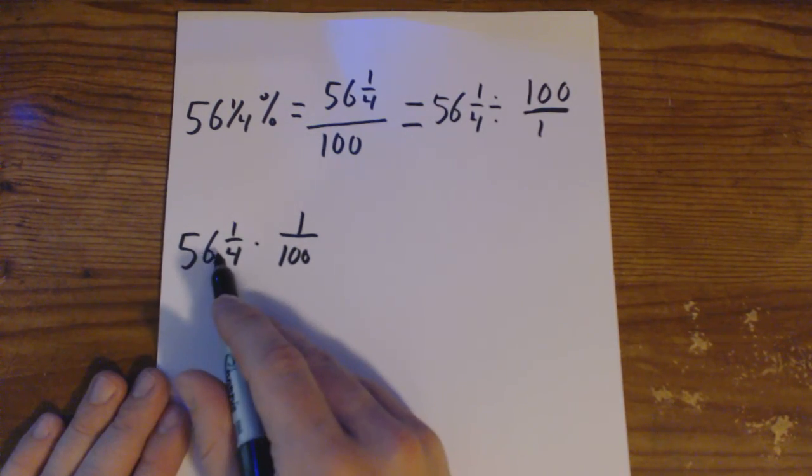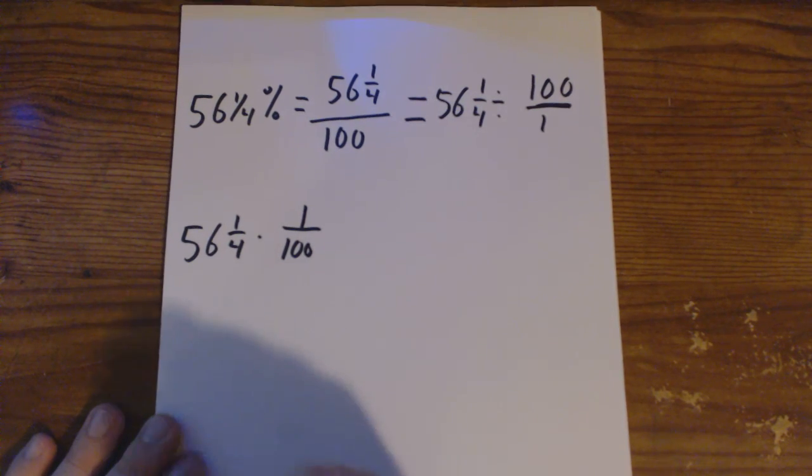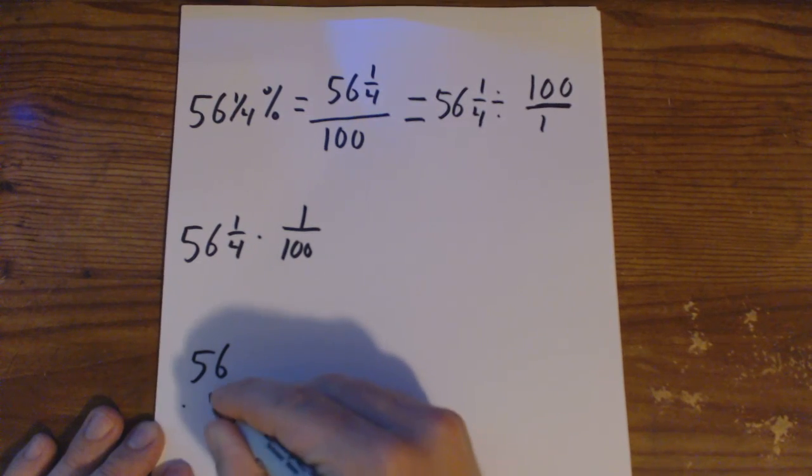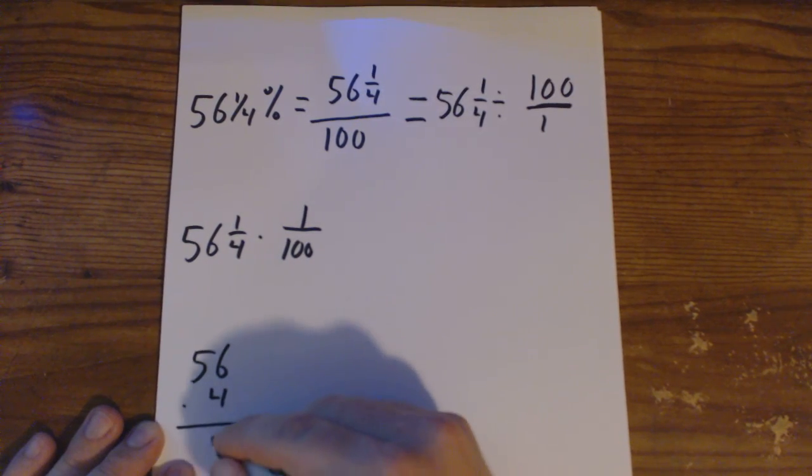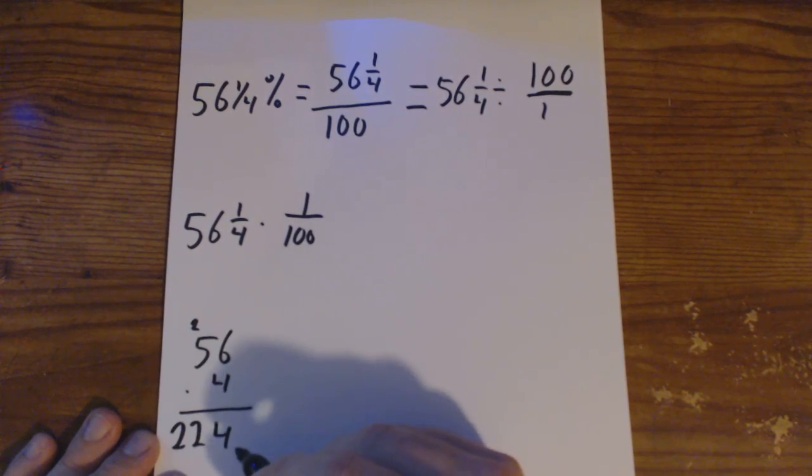We need to convert this into an improper fraction. So we're going to have to take 56 times 4 to find out what we're going to have. So 56 times 4 we have 224.